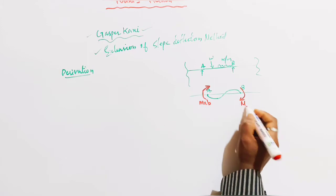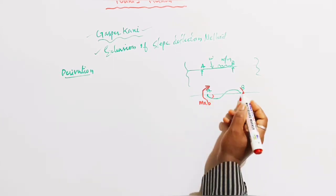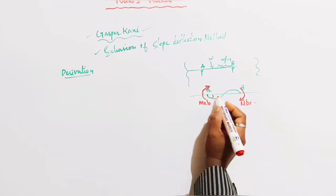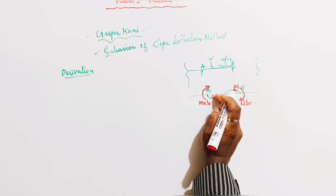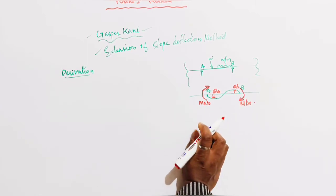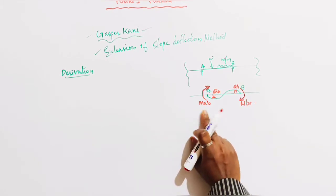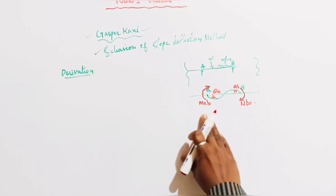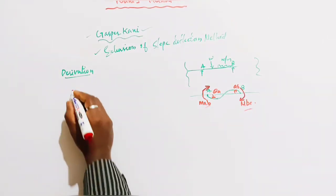M̄AB and M̄BA are the end moments for span AB. End A and end B undergo rotation — theta A at end A and theta B at end B. There is no lateral displacement of the ends.